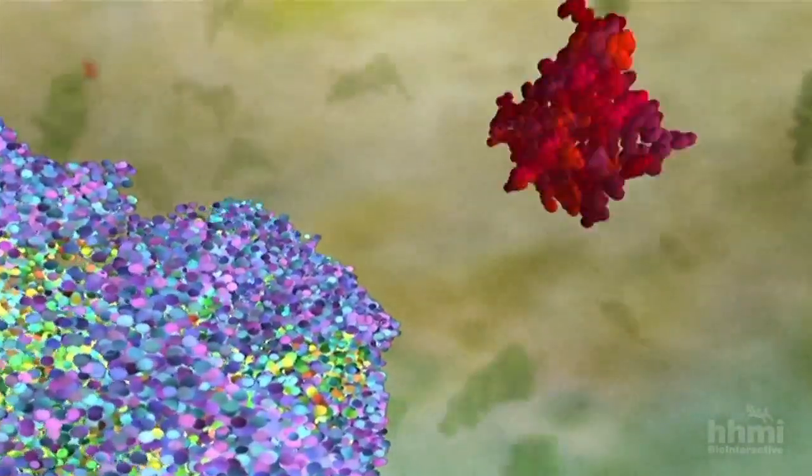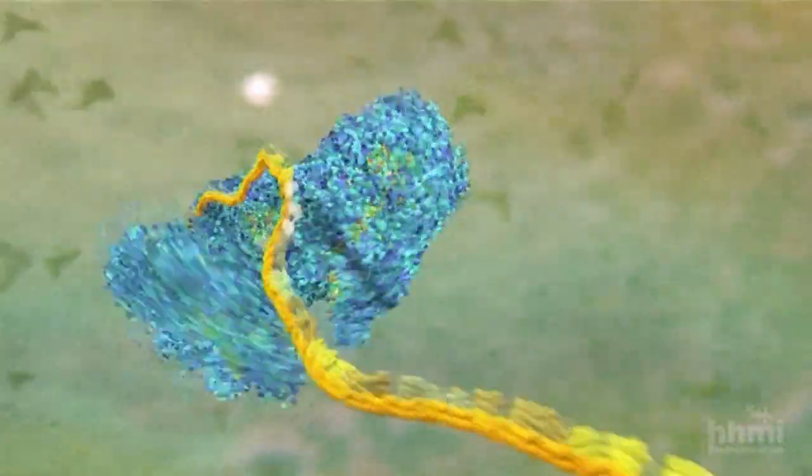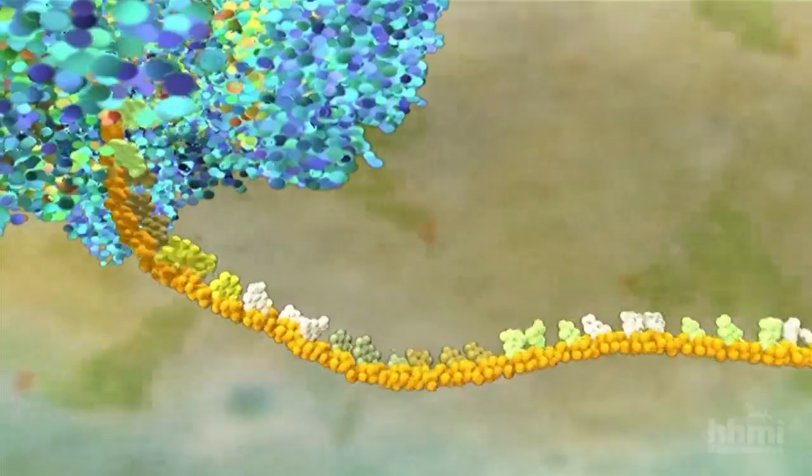Let's see how it works. The ribosome is composed of one large and one small subunit that assemble around the messenger RNA, which then passes through the ribosome like a computer tape.